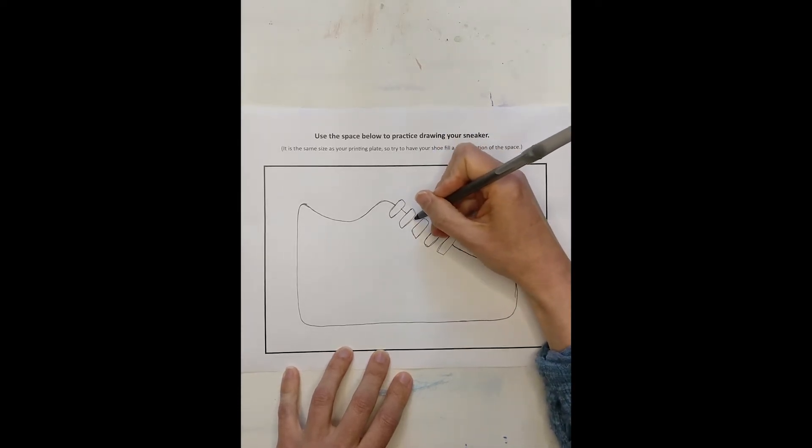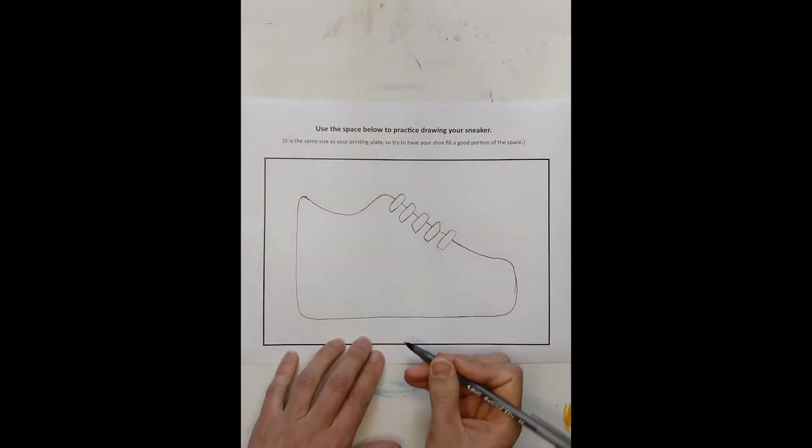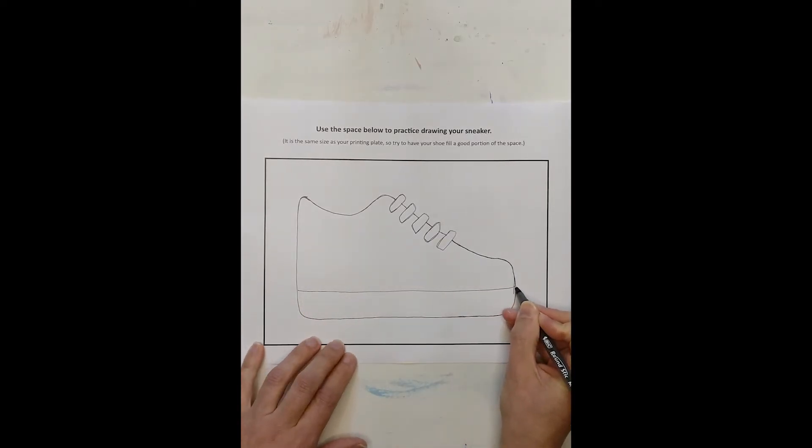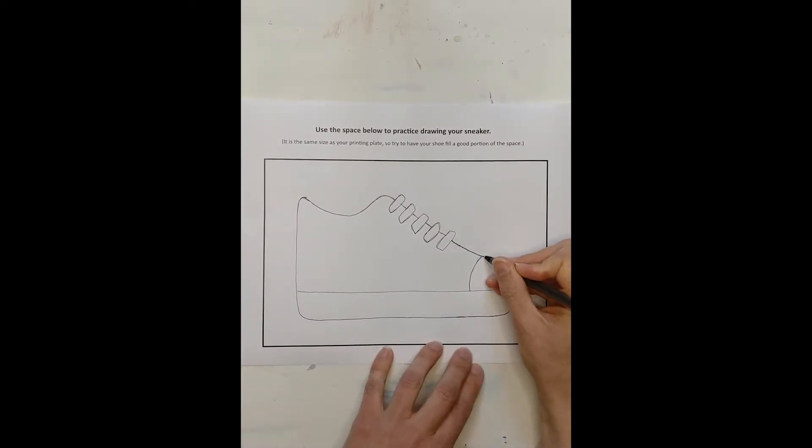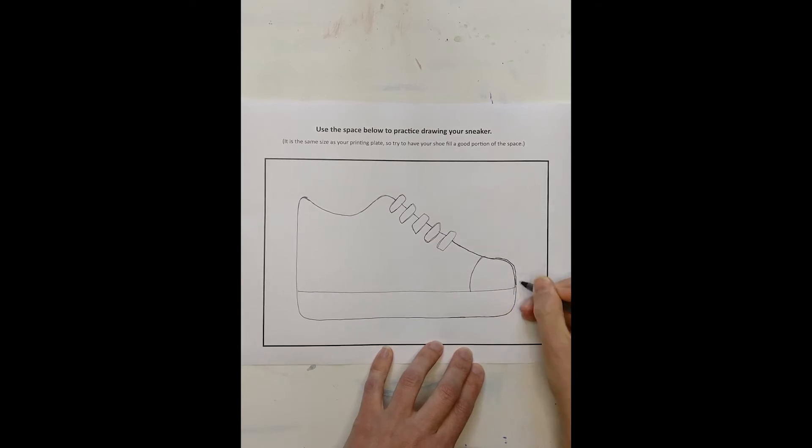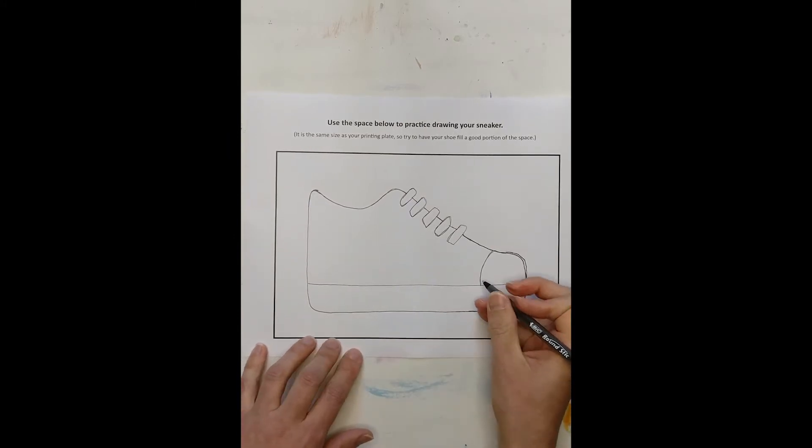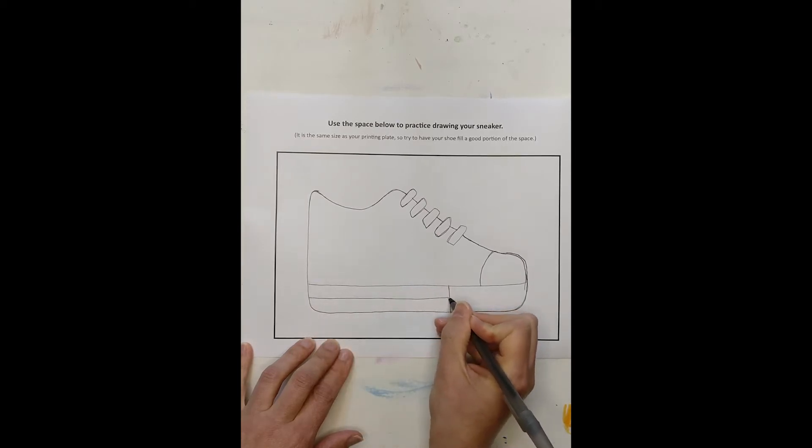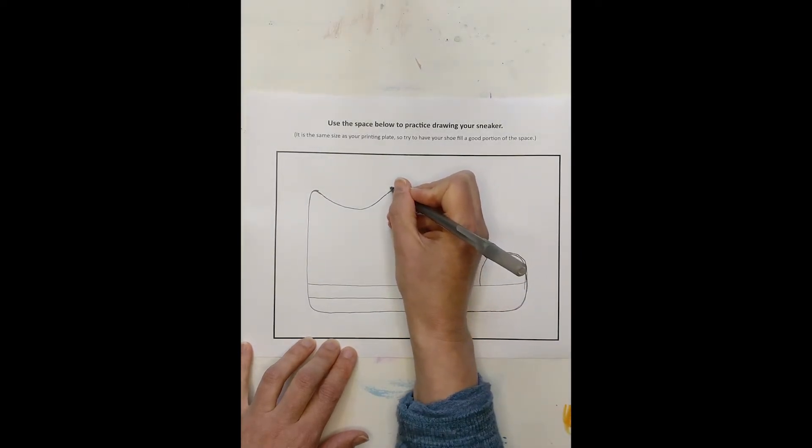And I'll connect it like that. And then I can connect it like this. And what do I need to do next? Probably this line. And that line, I might make my toe a bit more rounded. This is very basic. You can, of course, add as much detail as you want. But I'm keeping mine a little bit more simple.